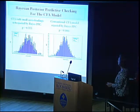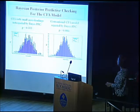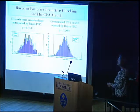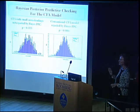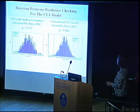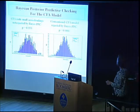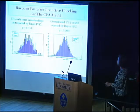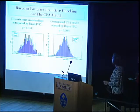With CFA with small cross-loadings, the model is not rejected by Bayes — we have a PPP of 0.353. But doing conventional CFA in Bayesian analysis gives a PPP of 0.006, which does not indicate good fit. We reject the conventional CFA model, whereas the small cross-loading model is not rejected. That is good news.